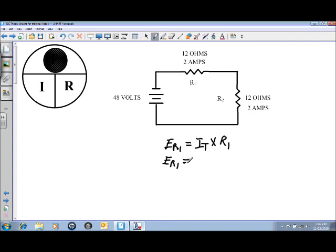Now the 2 amps is unchanging so it's going to be 2 amps of current flow times 12 ohms. So 2 amps times 12 ohms will give us a value of 24 volts. Now that's how many volts we dropped here at R1.